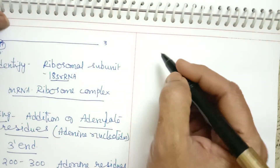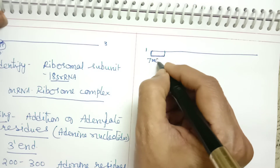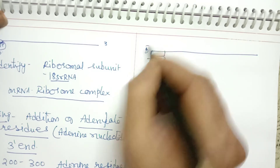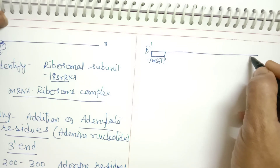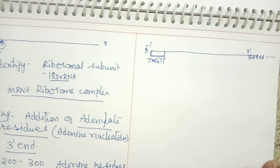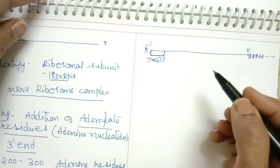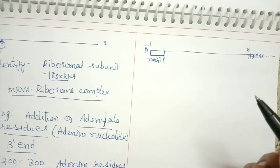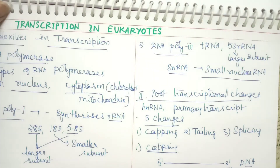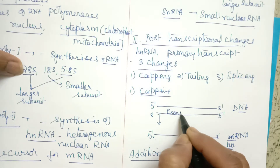So now we have a cap at the 5' end consisting of 7-methyl guanosine triphosphate, and many adenine molecules at the 3' end. In between, because it is transcribed from DNA, the DNA strand will have exons and introns. So the hnRNA will similarly contain both exons and introns.